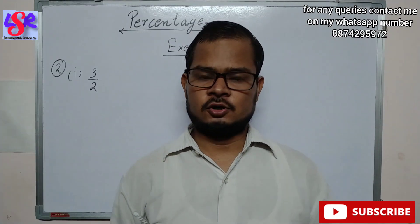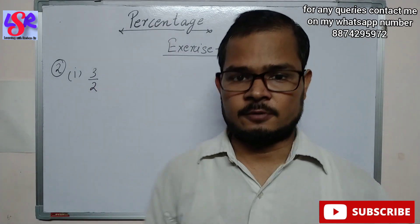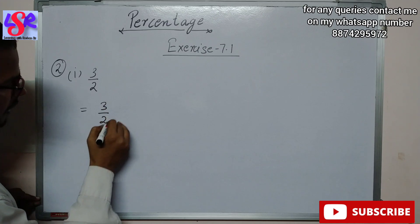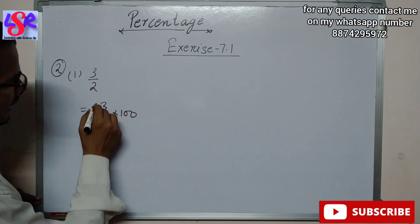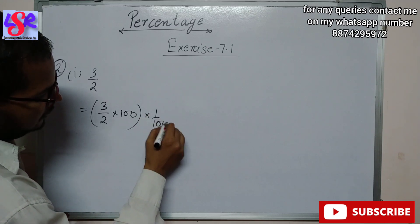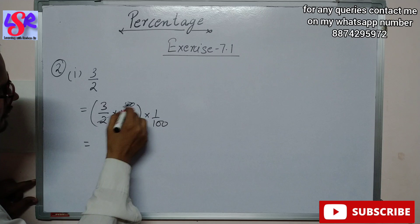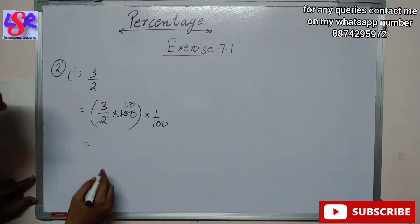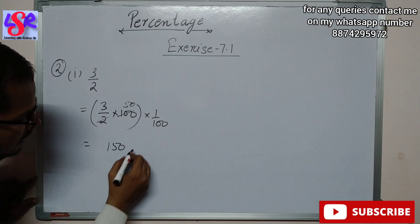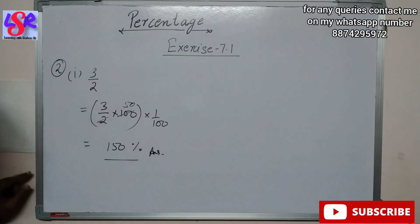Now let's go to Question 2. Here we have to convert the given fraction into percentage form. To do so, we multiply the number by 100 and also divide it by 100. Solving 2 upon 3 multiplied by 100: 2 cancels with 100 to give 50, and 3 into 50 is 150. Since 1 upon 100 is the sign of percentage, the answer is 150%.